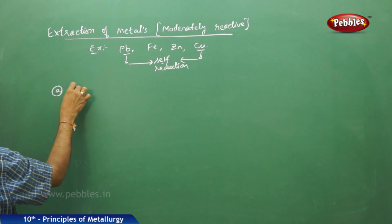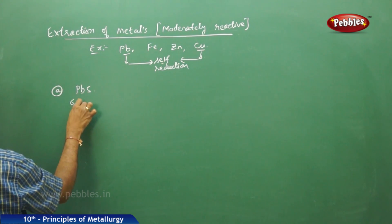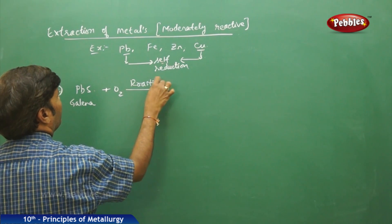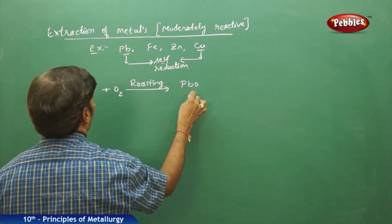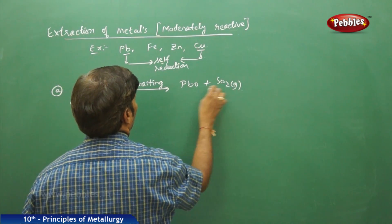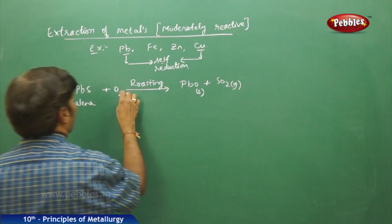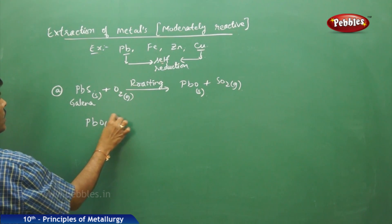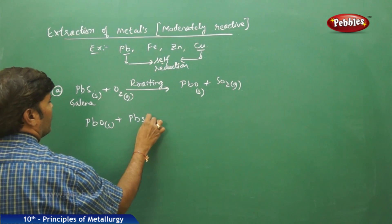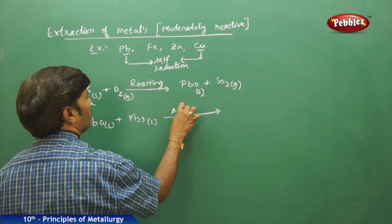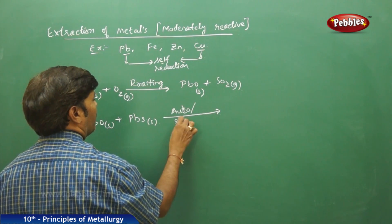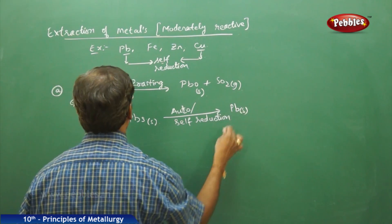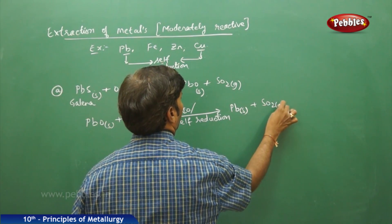In the case of lead, if you take PbS (Galena) and subject it to roasting, it forms lead monoxide (PbO) solid plus sulphur dioxide gas. Take this lead monoxide solid and treat it again with PbS solid — it undergoes auto or self-reduction to give Pb solid plus SO2 gas.